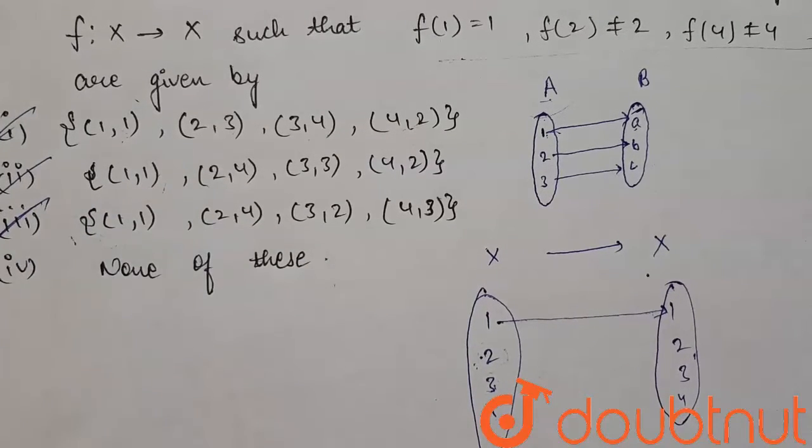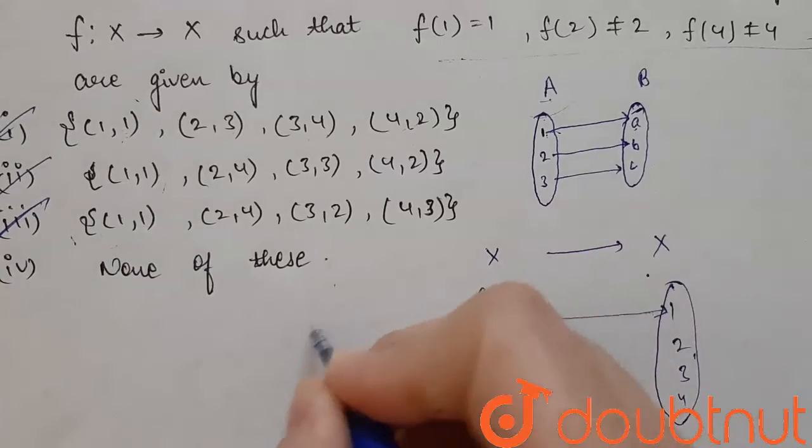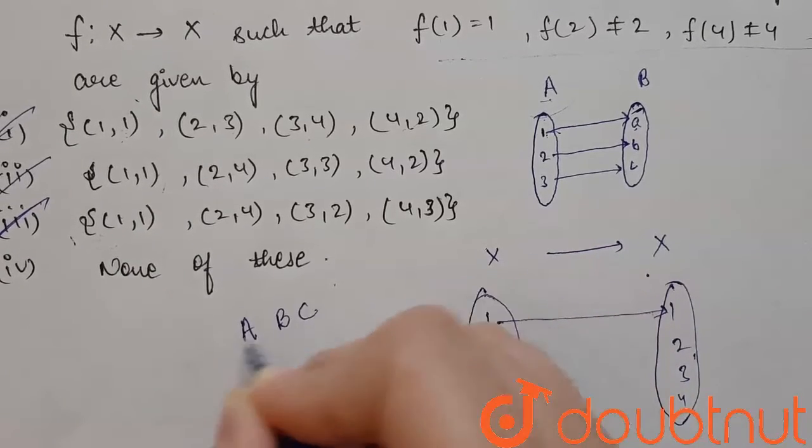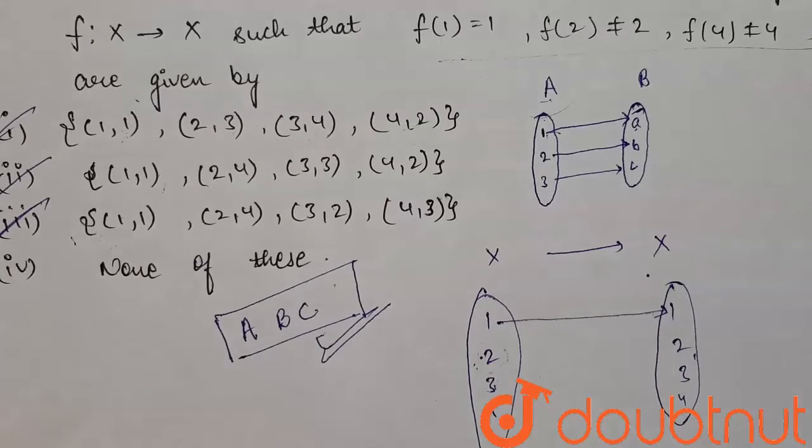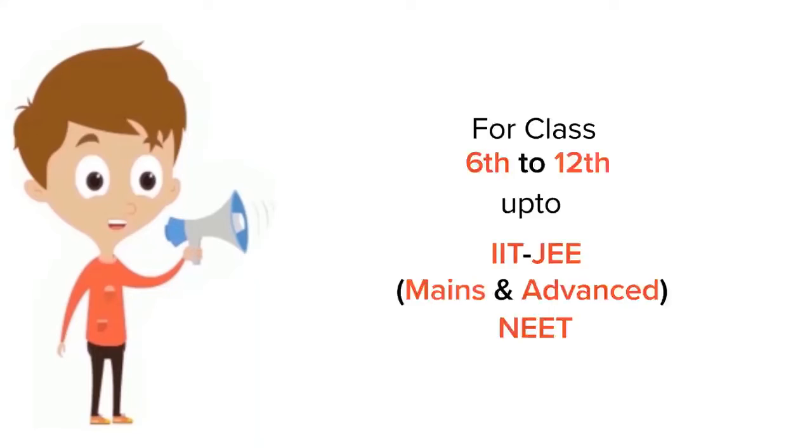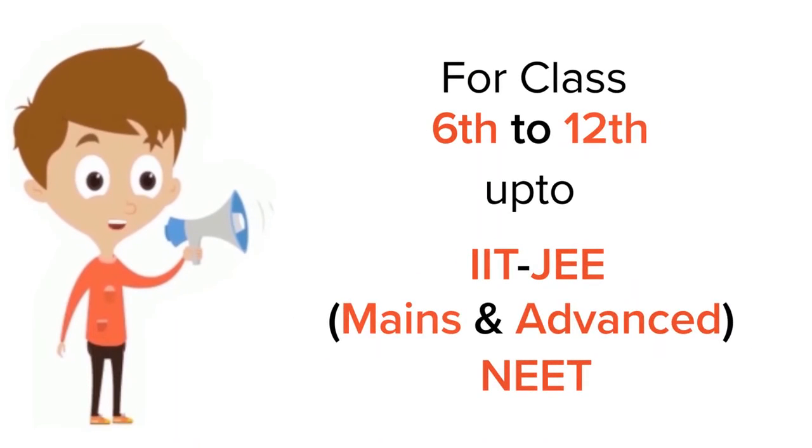And the fourth option is none of these. So as we are having these three as answer, so we cannot have the fourth option. So our answers are A, B, and C. These three options are our answer. Thank you.